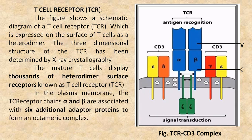In the plasma membrane, the T cell receptor chains alpha and beta are associated with six additional adapter proteins to form an octameric complex.